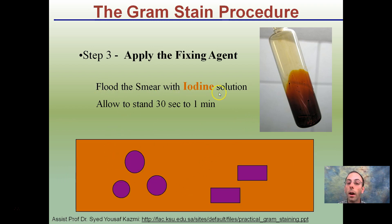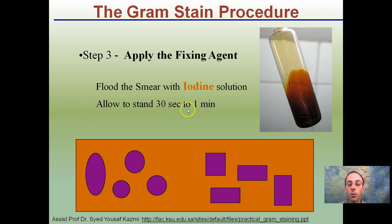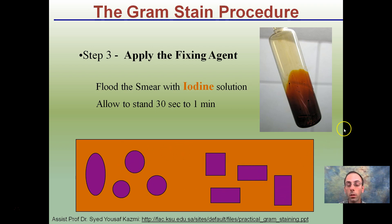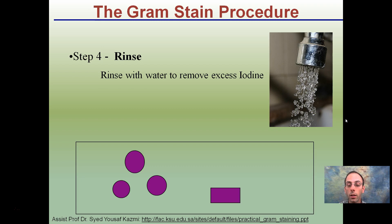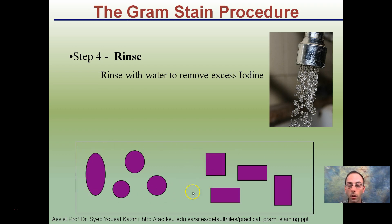Step three: flood the smear with iodine solution and allow that to stand for 30 seconds to a minute. At this point in the gram stain procedure, all of our bacteria are purple. We then rinse off and remove the excessive iodine. Now, after rinsing, we technically have all our cells being purple — but we're not done yet.